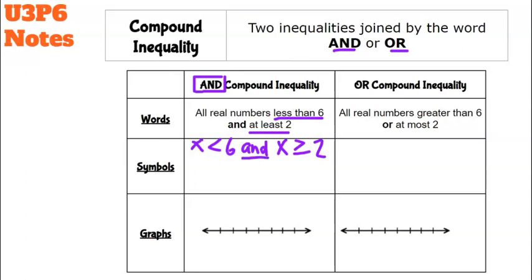The word 'and' is in the middle because a number can fit both of these qualities, and we can see this better on the graph. I'm going to put the numbers 2 and 6 on the number line, then graph both inequalities. For x < 6, I place an open circle at 6 and shade to the left.